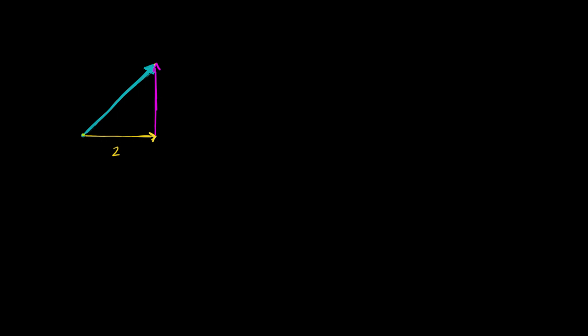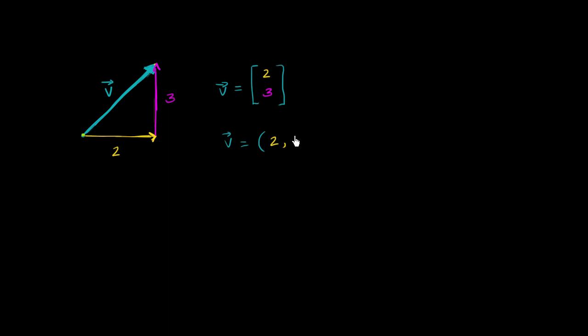And then in the vertical direction, you would have to go this distance right over here. So let's just say that this distance is 2, and that this distance is 3. We could represent this vector — let's call it vector v — as an ordered list, or a 2-tuple: we move 2 in the horizontal direction and 3 in the vertical direction. So you could represent vector v as (2, 3).